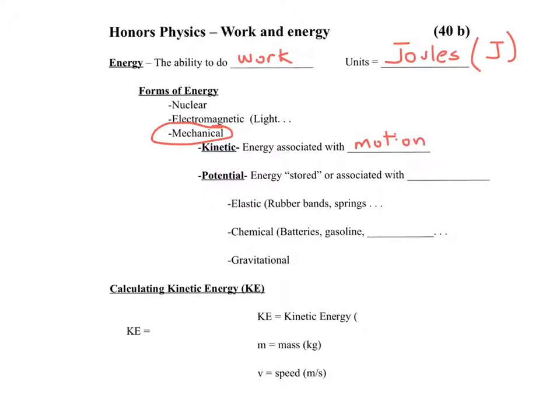Then there's potential, which comes in different forms. But potential energy is energy stored or associated with an object's position. For example, a rubber band can have elastic potential energy if you stretch it. If it's not stretched, it does not contain any potential to do anything, no energy.